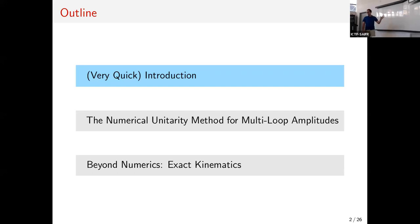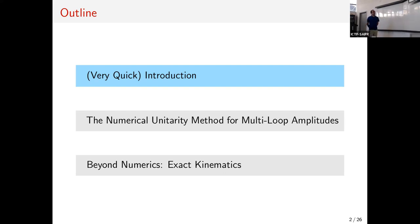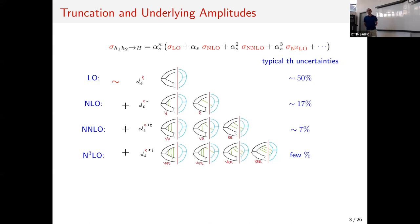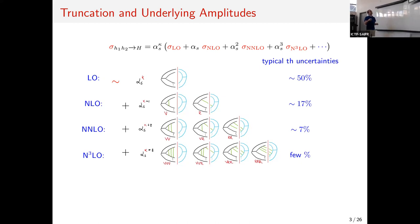The structure of the talk is rather simple. I have a very quick intro, then I spend some time describing what numerical unitarity is, and end up with what is actually rather peculiar: that even though these calculations are purely numerical, we can actually extract analytics out of them. In the context of collider phenomenology, particularly for hadron colliders, we're always thinking of an expansion of observables in terms of the strong coupling.